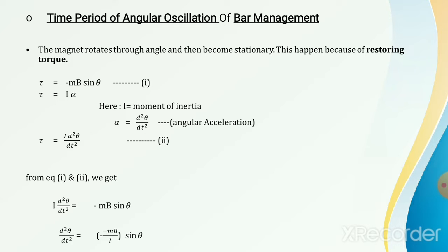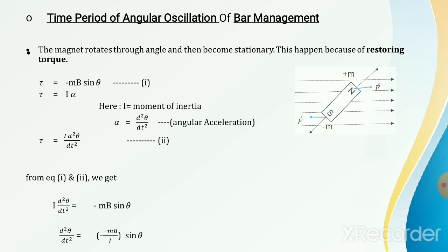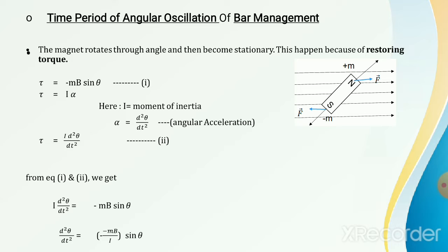We will derive the formula for time period. This is a very easy concept — I guarantee you will understand the video. First, we will revisit the previous diagram: in a uniform magnetic field, a bar magnet rotates due to the torque. After some time, this bar magnet comes to a stationary position.